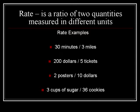Some rate examples might include: running 3 miles in 30 minutes, paying $200 for 5 concert tickets, purchasing 2 posters for $10, or using 3 cups of sugar to make 36 cookies.